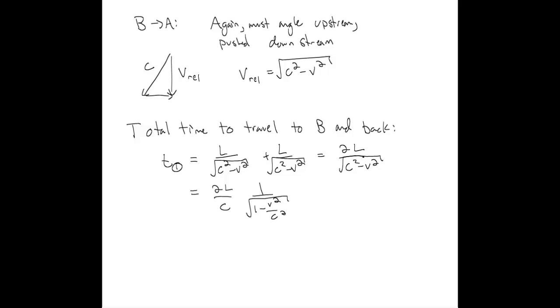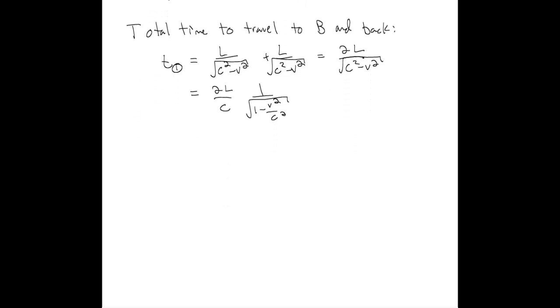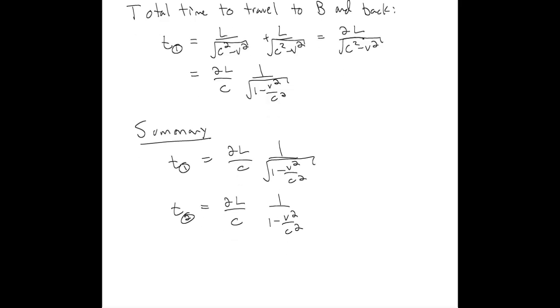So to summarize, the total time that it takes for boats to go on leg one and leg two is given by these expressions here. So we're assuming that the speed of the river is much smaller than the speed of the boat, otherwise it wouldn't be able to move. And so in that case, the time that boat one takes to make the return trip is less than the time it takes for boat two to make the return trip. And so boat one wins.